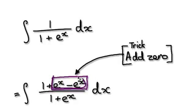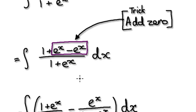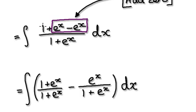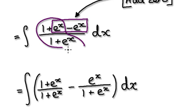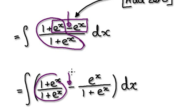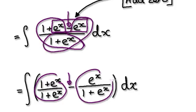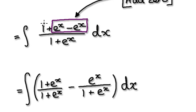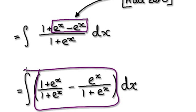Adding zero gives you this. Now look at this here — break this fraction up like this. This is one fraction, and then you minus this fraction here. So we rewrite it as this.